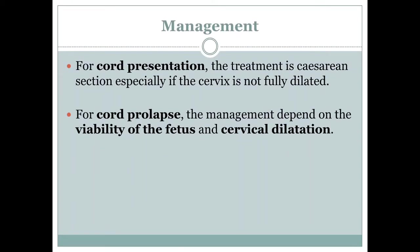How is cord prolapse managed? For cord presentation, the treatment is caesarean section, especially if the cervix is not fully dilated. For cord prolapse, the management depends on two factors: the viability of the fetus and the degree of cervical dilatation.